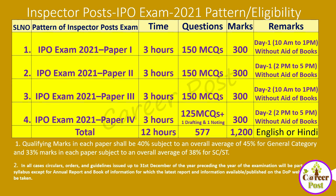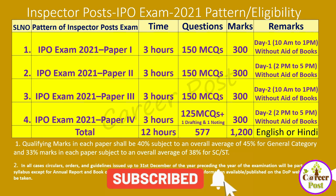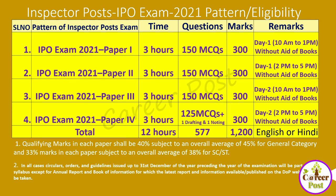You can write the examination in English or Hindi — both question papers will be printed in both languages, Hindi on the left side and English on the right side. You can answer in any language you wish. The qualifying marks are 40% in each paper subject to an overall average of 45% for the general category, and 33% in each paper subject to an overall average of 38% for SC/ST. If you don't qualify in any one paper, you will not be considered for the total merit.